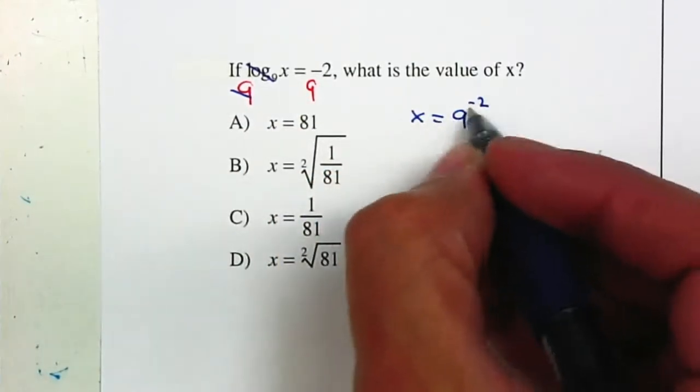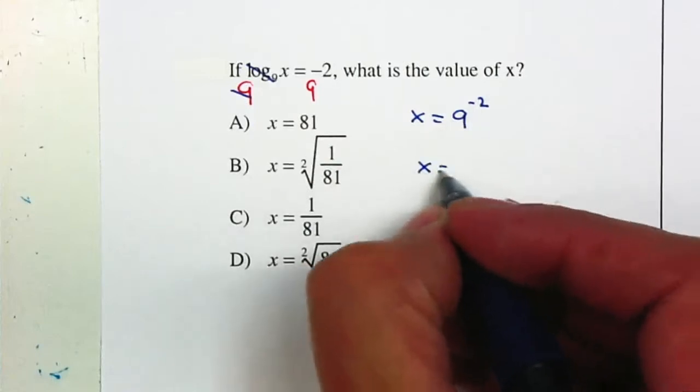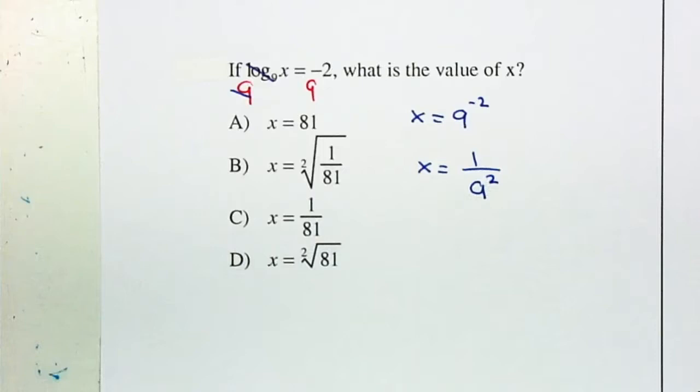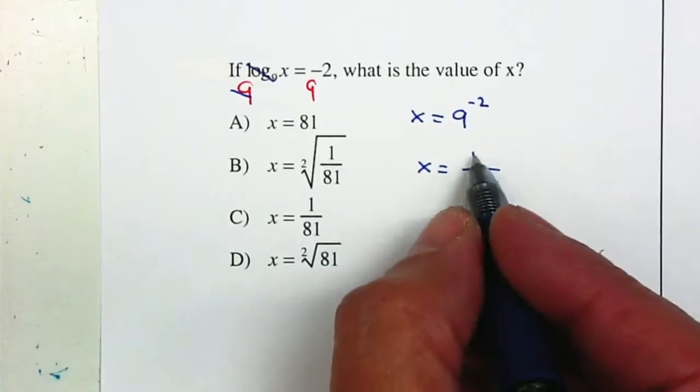Now remember, what happens when you have a negative exponent? When you have a negative exponent, it's going to come to the denominator and your exponent becomes positive. I'm going to place a 1 on my numerator since there's nothing left.